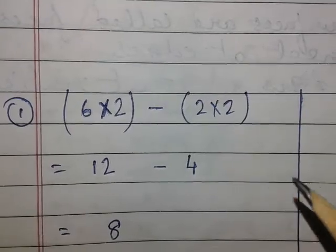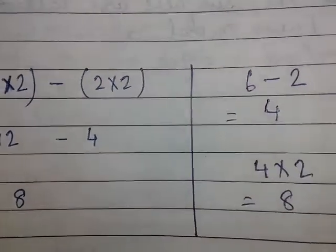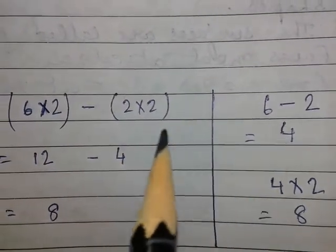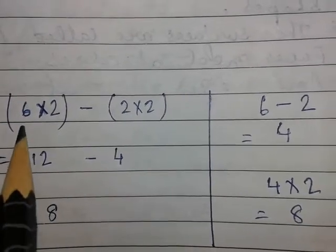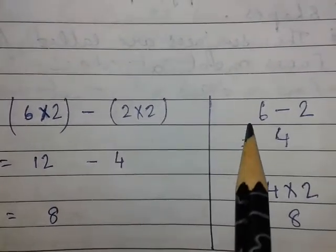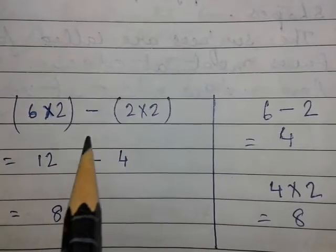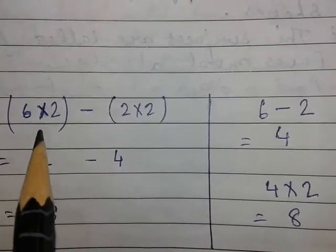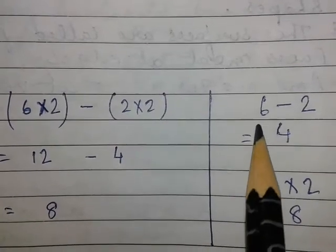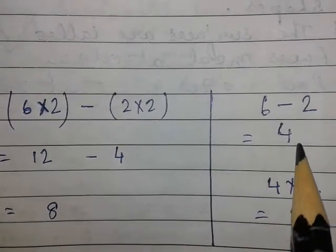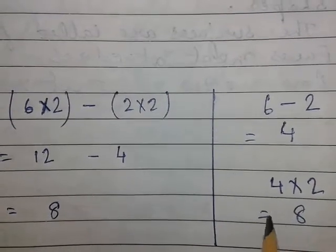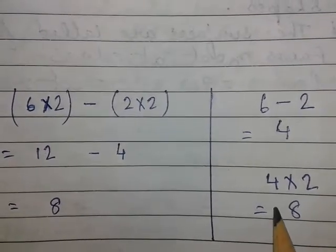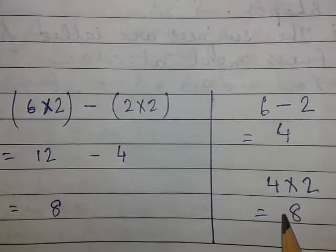Now, without doing this calculation, how can I find out the difference between six times two and two times two? I will show you — without doing the full calculation, I can find the difference between the two main numbers. This is six and this is two; the difference between six and two is four. So the difference between their products will be the difference between the numbers, multiplied by two. Four into two will be eight.